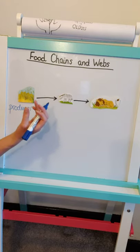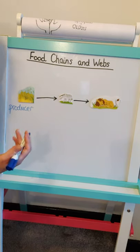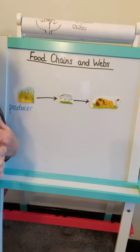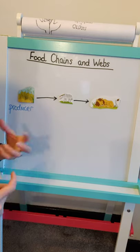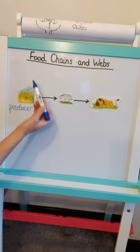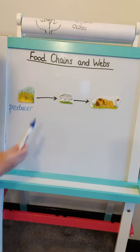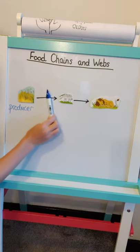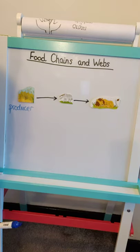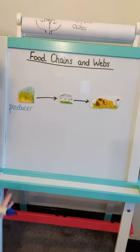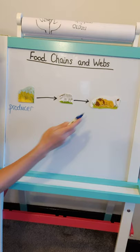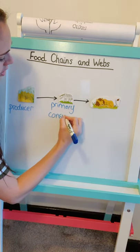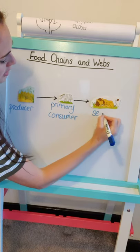Then the next one along is called a consumer. If you think about it, consume means to eat something — sometimes shopping is called consuming. So the plant is the producer, and everything after that will be a consumer because they're all eating. Just like with primary school and secondary school — primary means first, secondary means second — we have a primary consumer and a secondary consumer. So the zebra is our primary consumer and the lion is our secondary consumer.